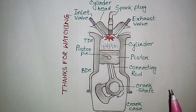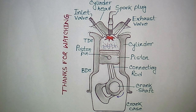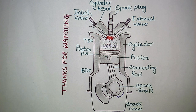In a compression ignition engine, the spark plug is replaced by a fuel injector. The fuel injector injects fuel directly into the cylinder. These are all the parts of an IC engine. Now let's understand its working principle.